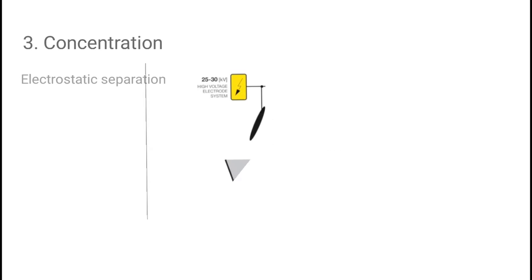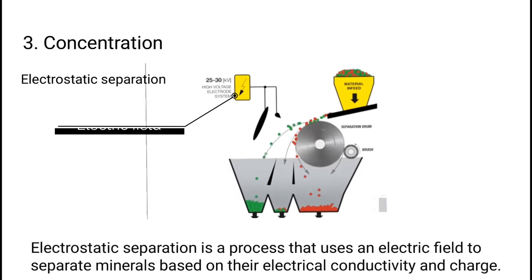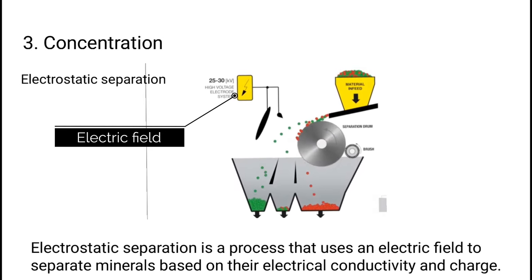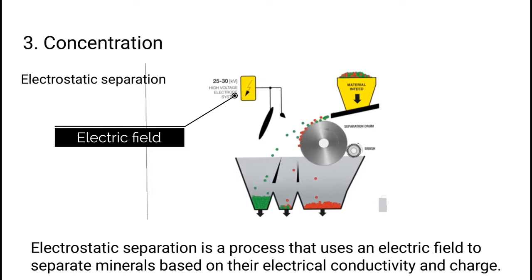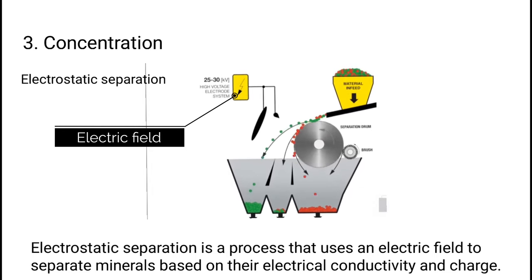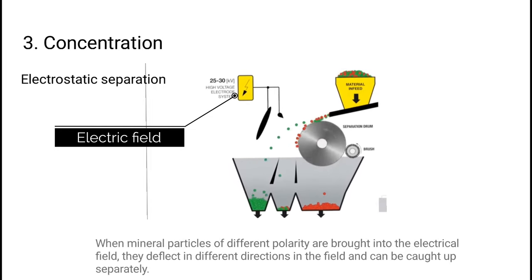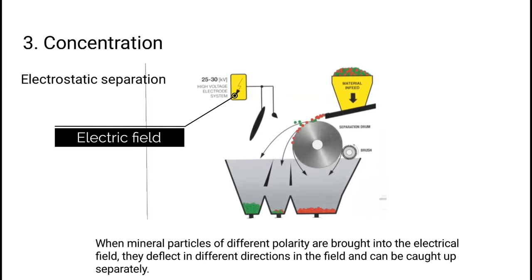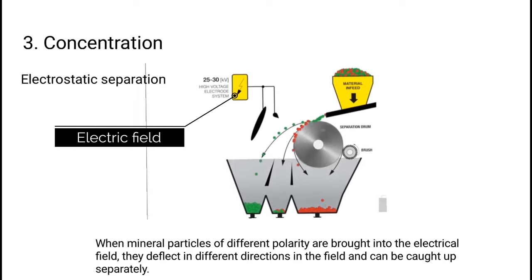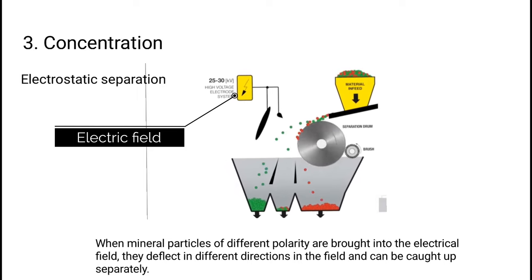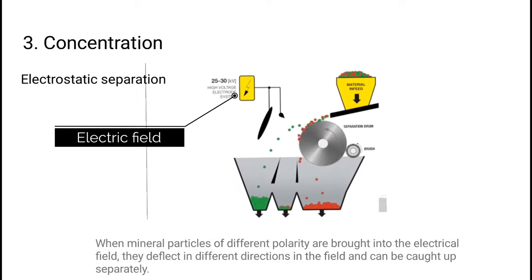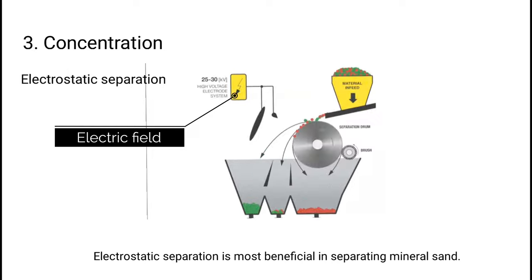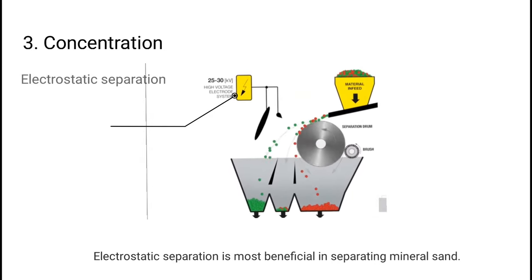Electrostatic separation: electrostatic separation is a process that uses an electric field to separate minerals based on their electrical conductivity and charge. When mineral particles of different polarity are brought into an electrical field, they deflect in different directions and can be caught separately. Electrostatic separation is most beneficial in separating mineral sand.